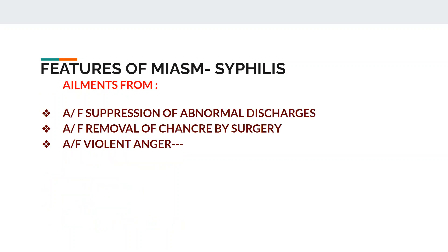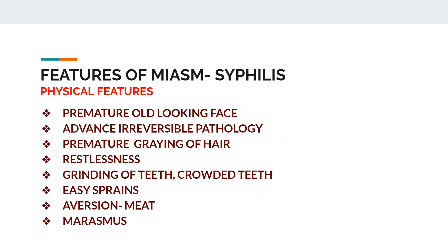The elements seen in syphilitic miasm come from suppression of abnormal discharges — suppression of otitis media, suppression of ulcerative discharge, suppression of chronic discharging sinus, and removal of chancre by surgery. At the mental level, ailments arise from violent anger as well as long-lasting grief. These are the causative features of syphilitic miasm.